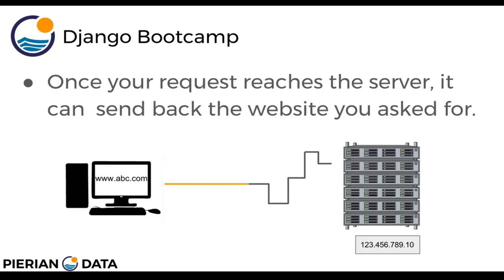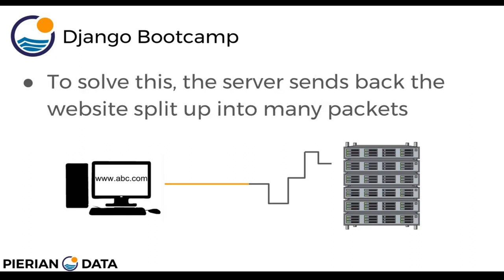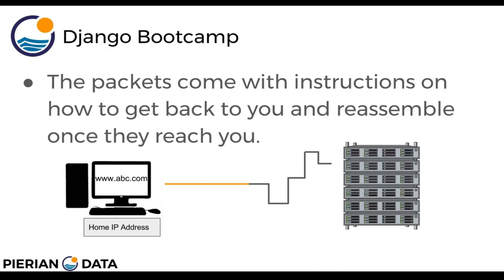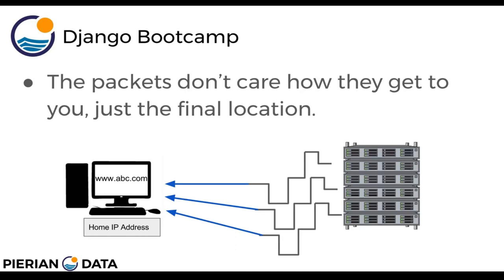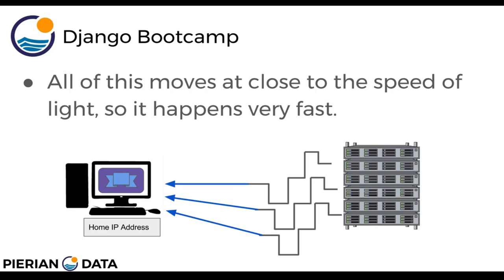Once your request reaches the server, it can send back the website you were asking for. However, a full website with content is too big to send back as a single packet of data. The server sends back the website split up into many packets, and the packets come with instructions on how to reassemble themselves once they reach you. The packets don't care how they get to you — just the final location — so they may take different paths to reach your computer. What they care about is the fastest way to get back to your home IP address, and once they arrive they're reassembled to show whatever page you were looking for.